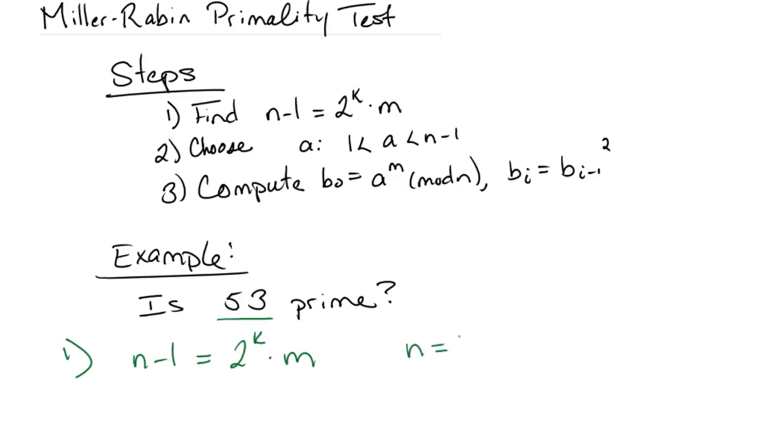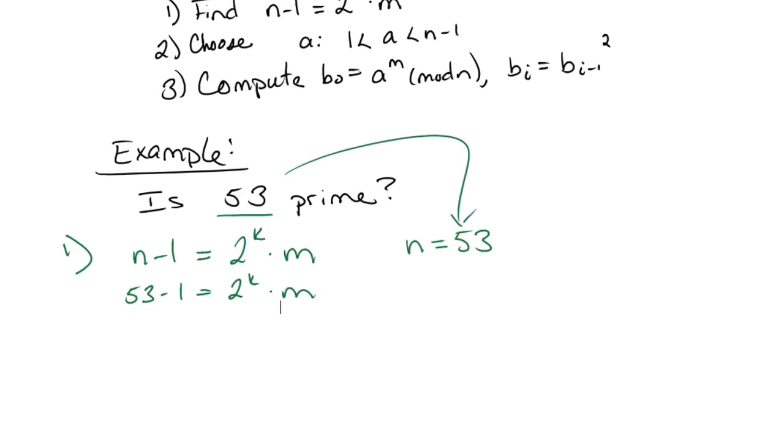Okay, first of all, n is 53. n is the number that we are testing. It's the number in question. So 53 minus 1 equals 2 to the k times m. We want to know what is k and what is m. And also k and m need to be whole numbers.